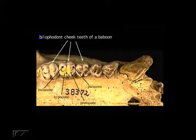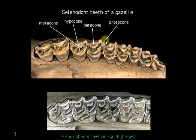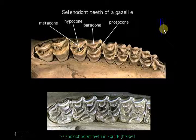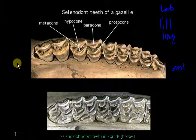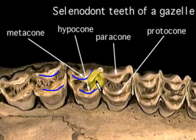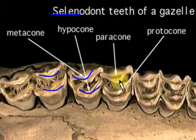For other herbivores like grazers and browsers, they have selenodont teeth. Instead of the ridges running from labial to lingual, in selenodont the ridges run from anterior to posterior. They are often crescent-shaped — 'seleno' from the word for moon — hence the crescent shape.